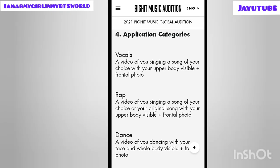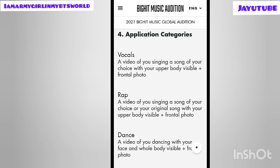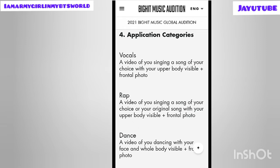Now let's look at the application categories. First is vocals: a video of you singing a song of your choice with your upper body visible, plus a frontal photo. Make sure your face is clearly seen and your facial expressions are captured in the video. Second is rap: a video of you rapping — or singing your original song — with your upper body visible, plus a frontal photo. Make sure your facial expressions are properly visible in both singing and rapping video.